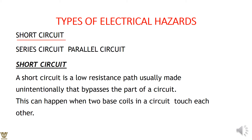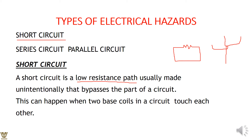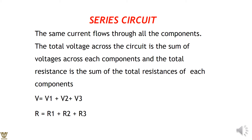The types of electrical hazards include short circuits, series circuits, and parallel circuits. A short circuit is a low-resistance path in an electrical wire — a low-resistance part that bypasses part of the circuit. This is usually unintentional and can happen when two phase coils touch each other, becoming entangled, which is where a short circuit can occur.